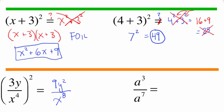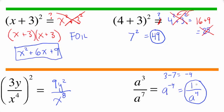Now let's take a look at a³ over a to the seventh, and I'll cover a very quick example of what mistakes students make. People know we're supposed to subtract the powers, so they'll say 7 minus 3 is 4 and think it's just a to the fourth — but the answer is no. You do 3 minus 7, and 3 minus 7 is negative 4. So one way of writing this is a to the negative 4, which is really 1 over a to the fourth — and that is our final answer. Sometimes people do this quickly by noting 7 minus 3 equals 4 and writing the answer in the denominator, because there are more a's — 7 times in the denominator.